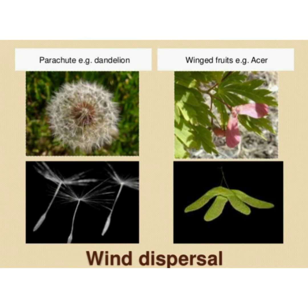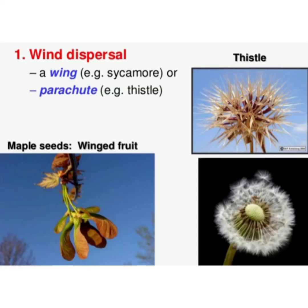How do plants spread their seeds by wind? Many plants have seeds that are very light and easy to carry away by wind. These seeds have hair or wing-like structures that help them be easily carried away by the wind to other places. For example: cotton, dandelion, and swan plants.